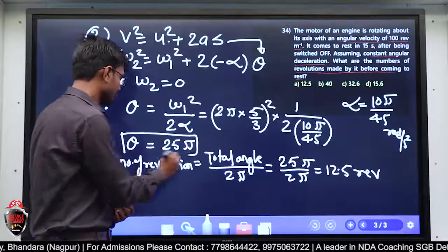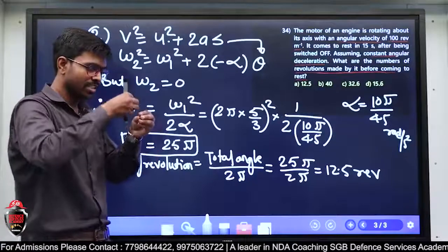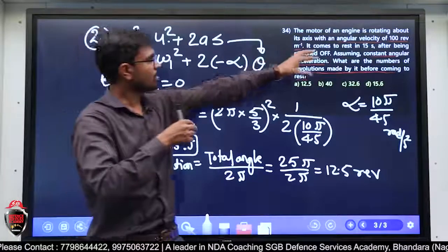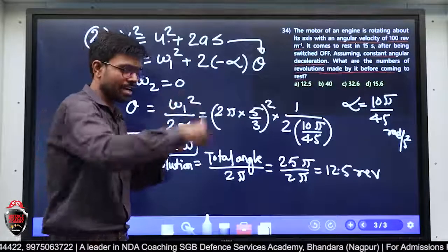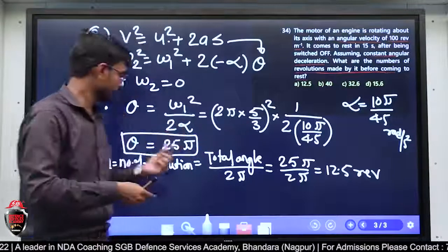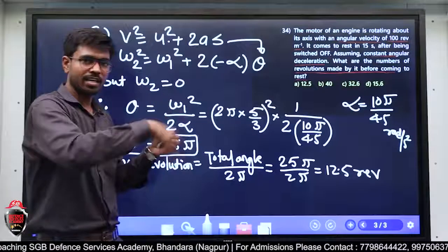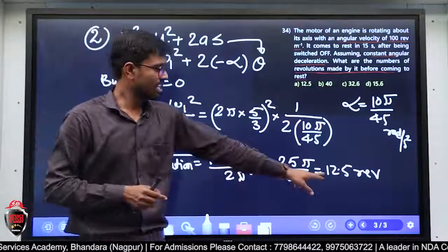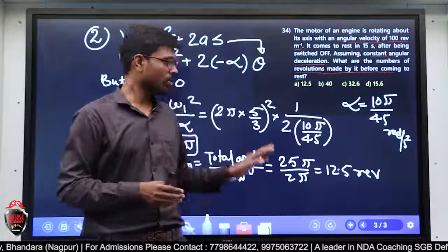θ = 25π रadian। Switch off किया तब से rest तक उसने 25π angle cover किया। Number of revolution = total angle / angle per revolution = 25π / 2π = 12.5 revolution। तो इस तरह से हमने यह problem देखा।